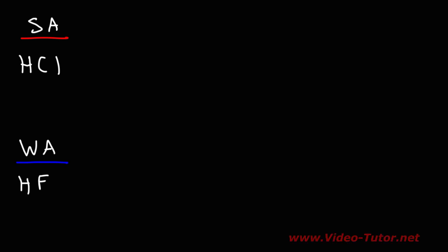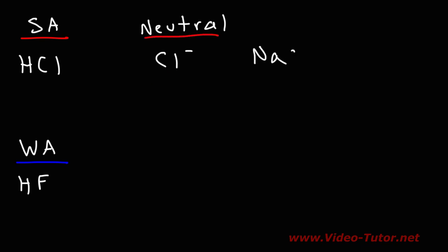The conjugate base of a strong acid is neutral — you don't really even consider it a base. Chloride is a neutral ion. If you were to dissolve sodium chloride in water, the pH of the solution will remain 7. So the chloride ion is a neutral salt; it doesn't change the pH of the solution.